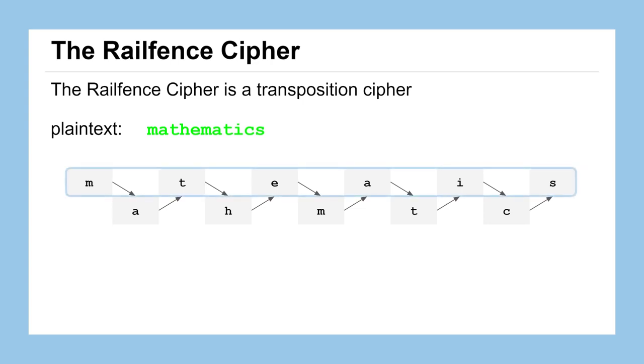We'll group the top row or rail together to create m-t-e-a-i-s and we'll do the same for the bottom row to create a-h-m-t-c. We'll take the top row and make it the first part of our ciphertext and append on the second row to finish it out. We'll group it down below by letters of five to help disguise the length of our words and any spaces or anything like that and we get the final ciphertext of m-t-e-a-i-s-a-h-m-t-c.